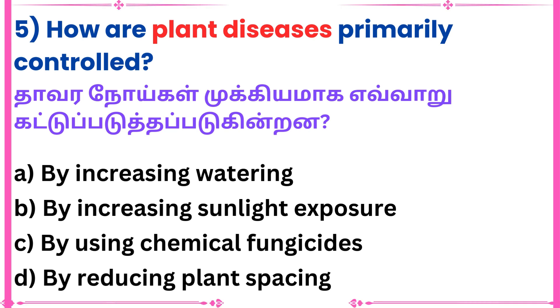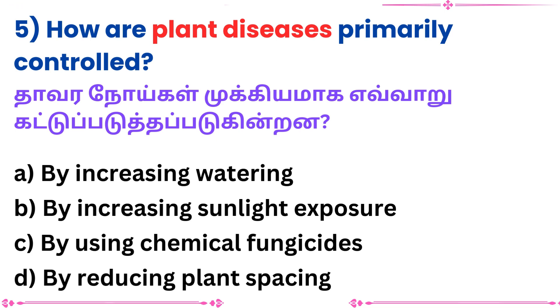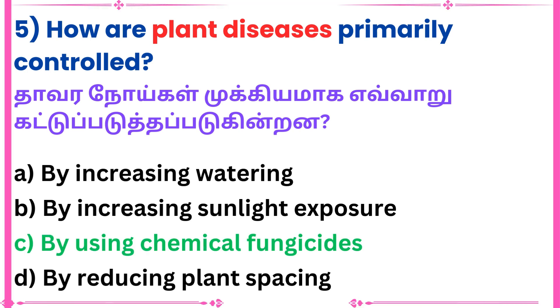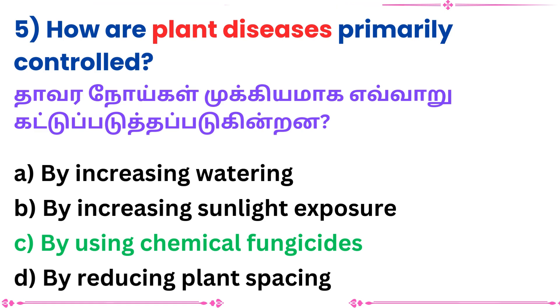Fifth question: How are plant diseases primarily controlled? Answer: By using chemical fungicides.